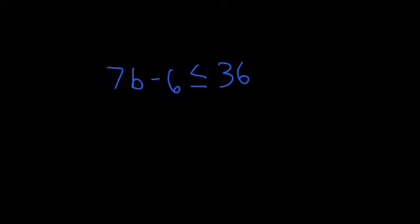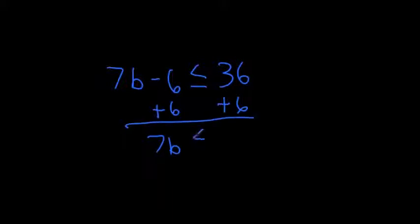Now I have 7b minus 6 is less than or equal to 36. Again, get rid of that subtraction first. I'm going to add 6 to both sides, keeping my equation balanced. So I get 7b is less than or equal to 36 plus 6, which is 42. The opposite of times 7 is divide by 7. So b is less than or equal to 42 divided by 7, which is 6.